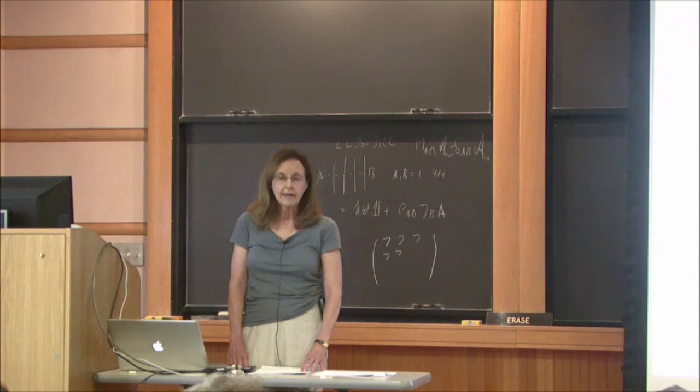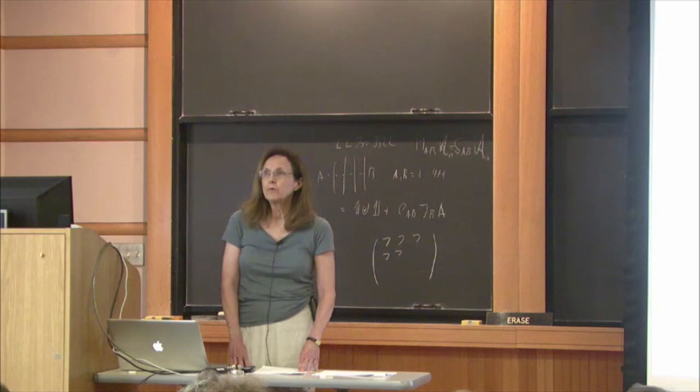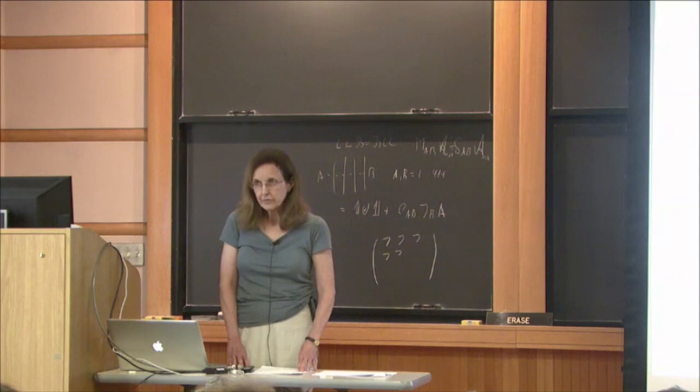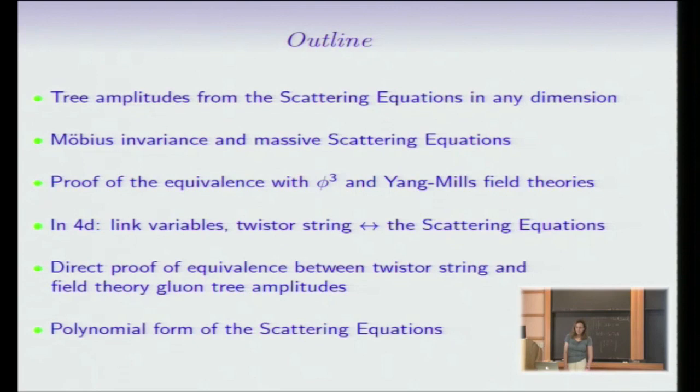If we now restrict to four dimensions and use the link variables that were originally introduced for field theory by Arkani-Hamed, Cachazo, Cheung, and Kaplan, we can use those link variables in the twister string, which is a four-dimensional space-time object, and show how the twister string of Witten and Berkovits implies the scattering equations, and conversely that the scattering equations imply twister string equations. I'll then sketch our earlier proof for the complete equivalence between the twister string amplitudes and the Yang-Mills theory at tree level. And finally, to end, I will show you a new polynomial form of the scattering equations that will facilitate the computation of their solutions.